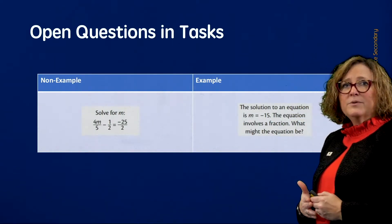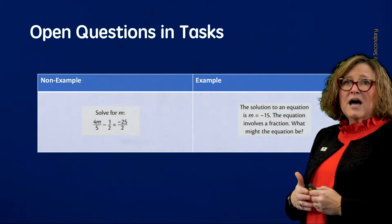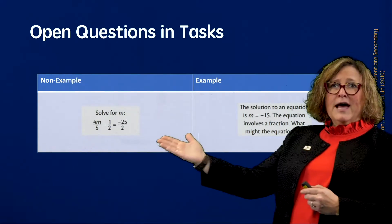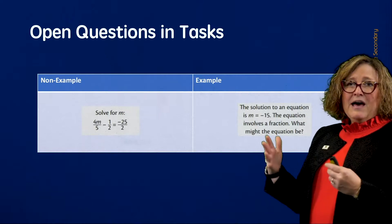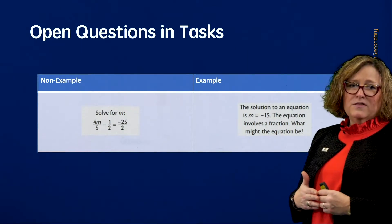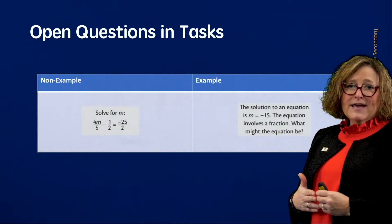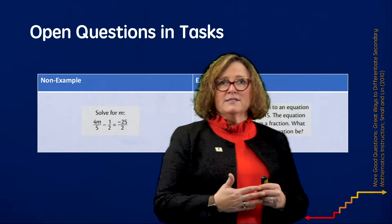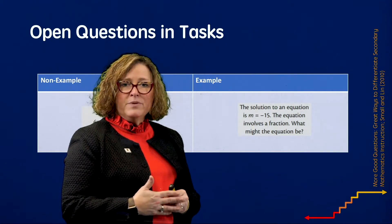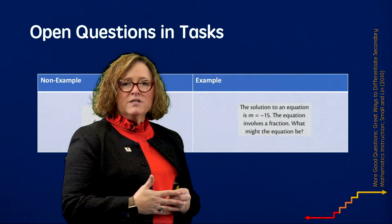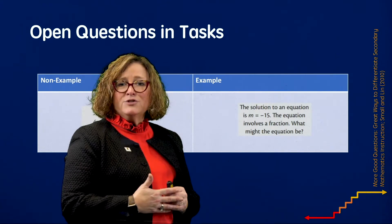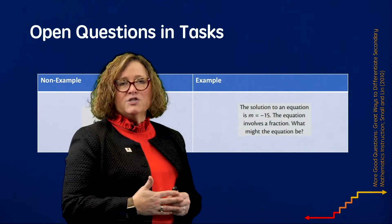Here's an example and a non-example. The non-example might be asking students to solve for M in a particular equation. That question has only one correct answer, and the student response tells you only if they can get the right answer or not — it doesn't give you information about what they understand. The example question in contrast: the solution to an equation is M equals negative 15, and the equation involves a fraction — what might the equation be? This is open enough to allow students to approach it using different strategies, allows students at different levels of mastery to benefit, and gives you as the teacher more insight into students' understanding of the concept.